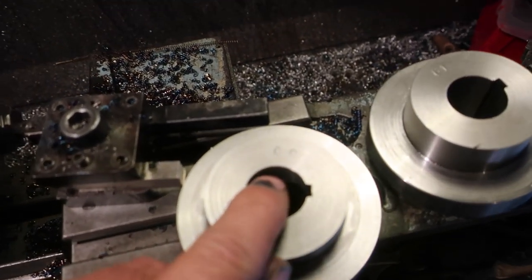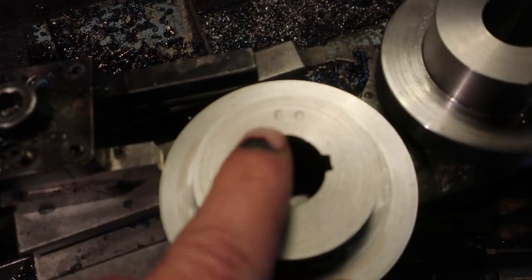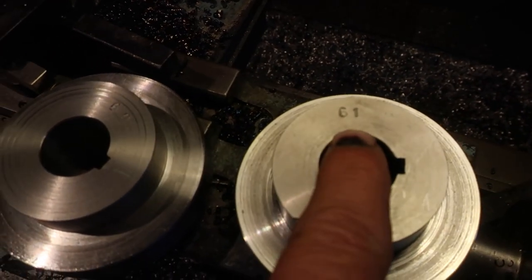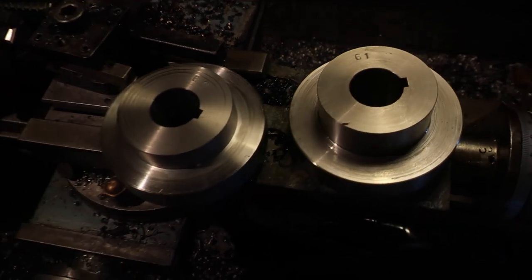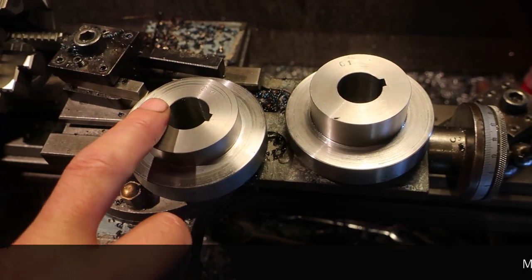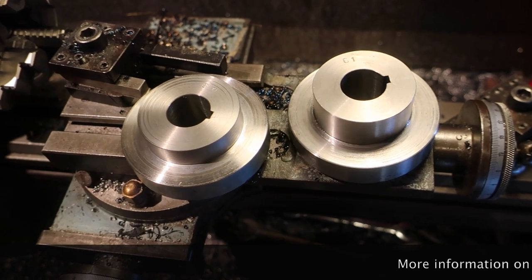As we zoom in, you may notice this one is marked 60 and this one is marked 61. We're going to be making a set of bevel gears with 60 teeth on the input and 61 on the output.